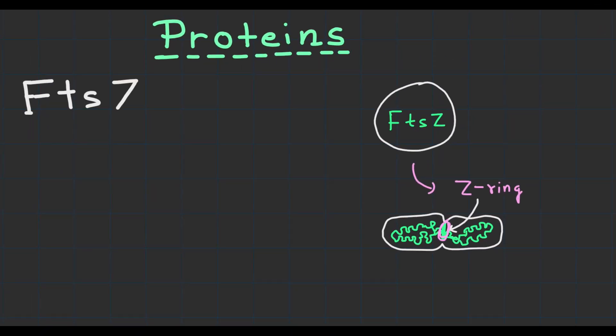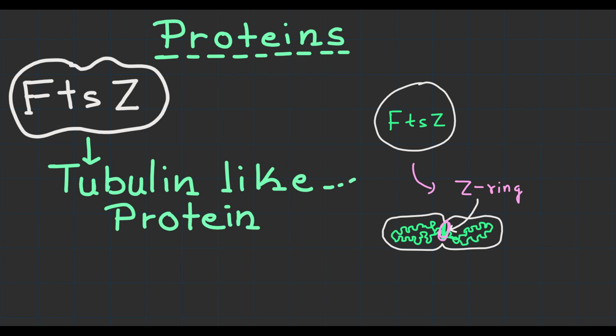One of the central players in the divisome core complex is FtsZ, a tubulin-like protein. FtsZ forms a ring-shaped structure called the Z ring at the site of cell division. This ring acts as a scaffold recruiting many divisome proteins to the division site.